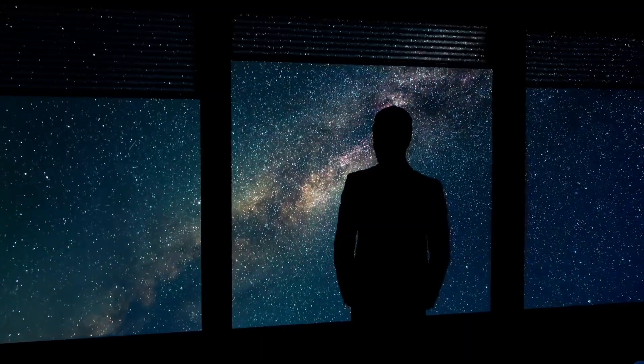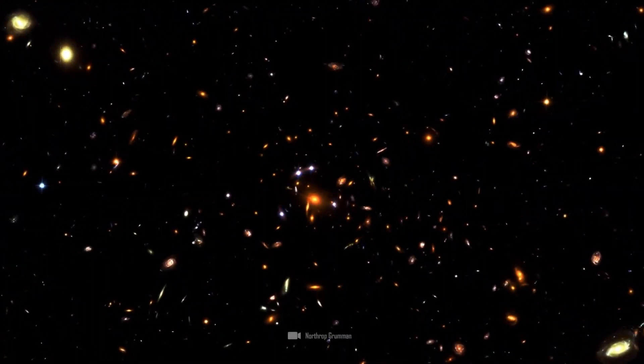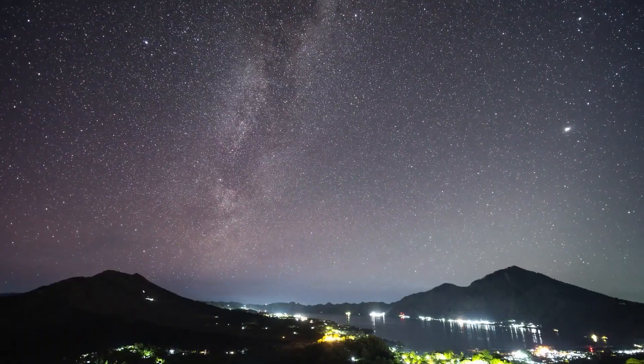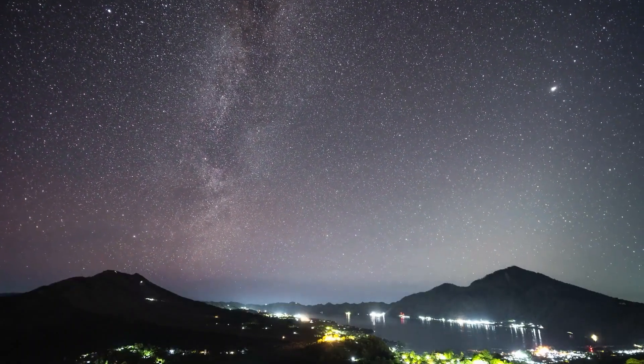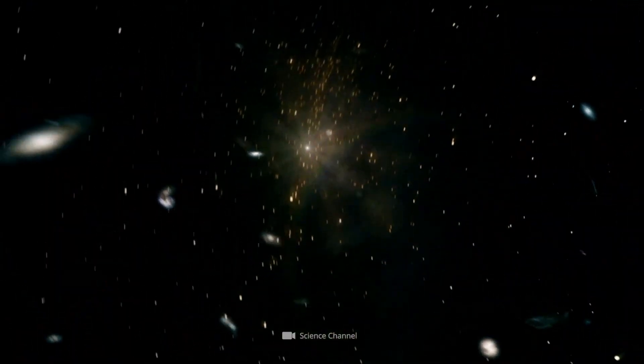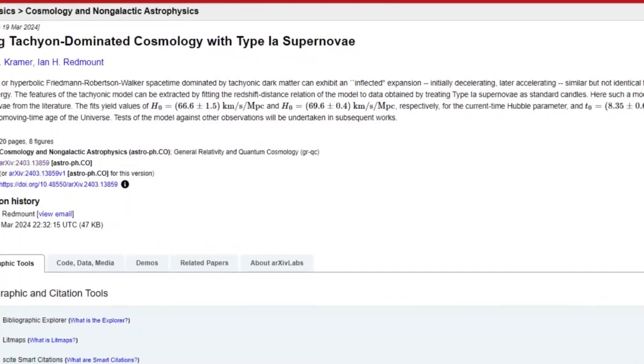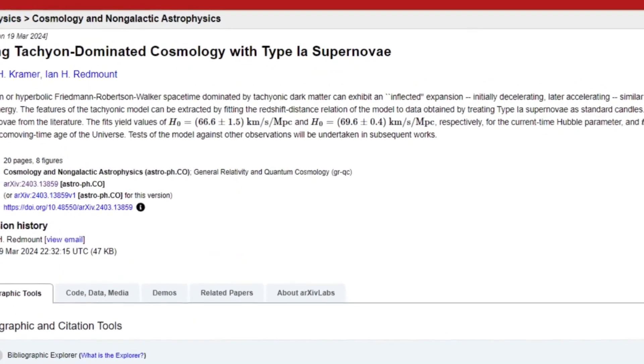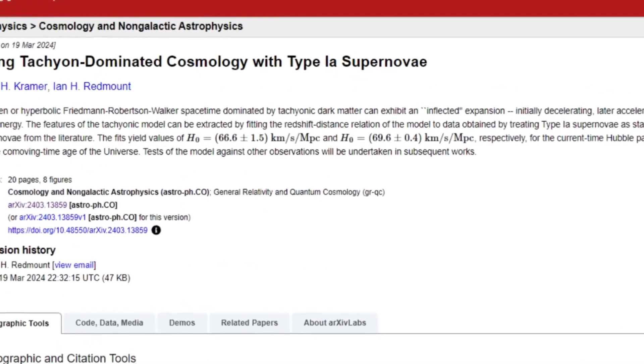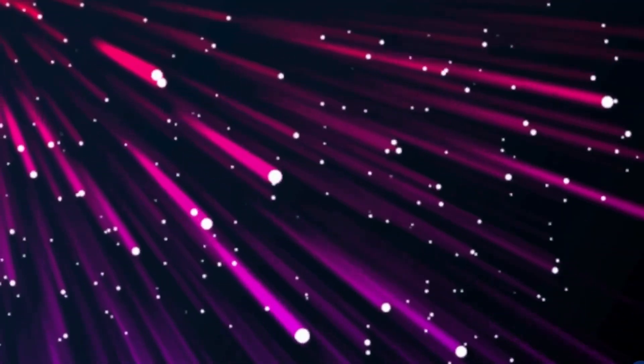Furthermore, the theoretical implications of tachyons interacting with normal matter raise questions about causality and the nature of time. If tachyons can indeed transmit information faster than light, this could lead to scenarios where cause and effect are reversed, creating what is known as causal loops.